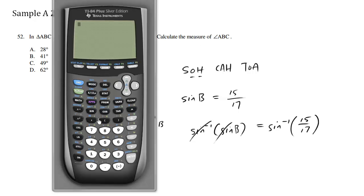So we use our calculator. Second sine inverse, that's the blue words there, of 15 divided by 17, enter. As long as you're in degree mode, 61.9 degrees.